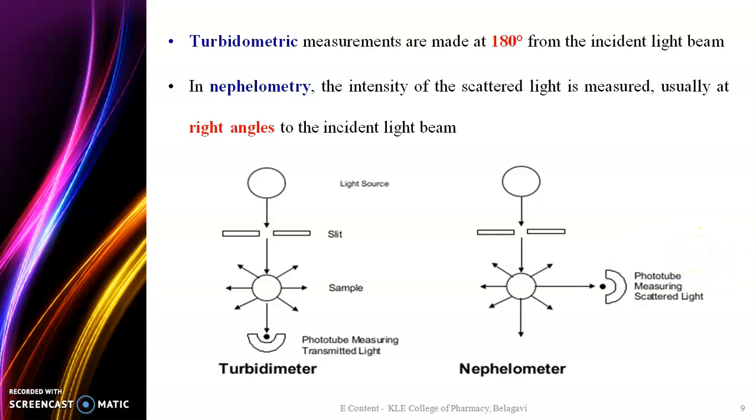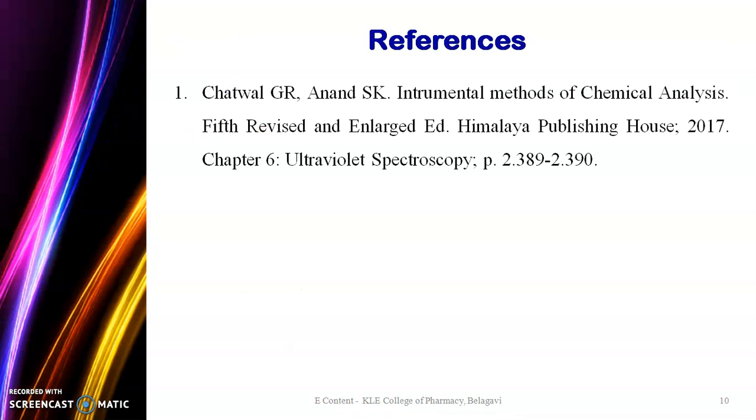This is the basic difference between both techniques. Turbidimetry measures transmitted light at 180 degrees and Nephelometry measures the scattered light at 90 degrees. Thank you.